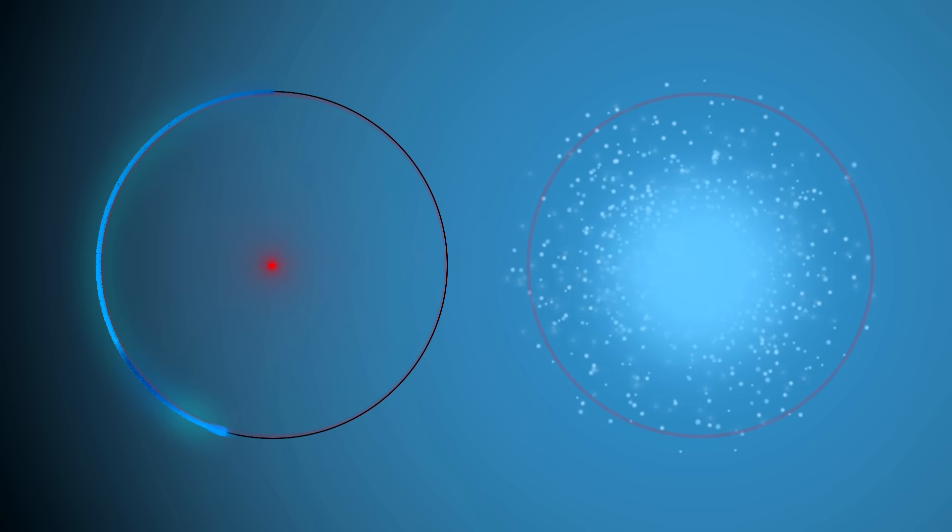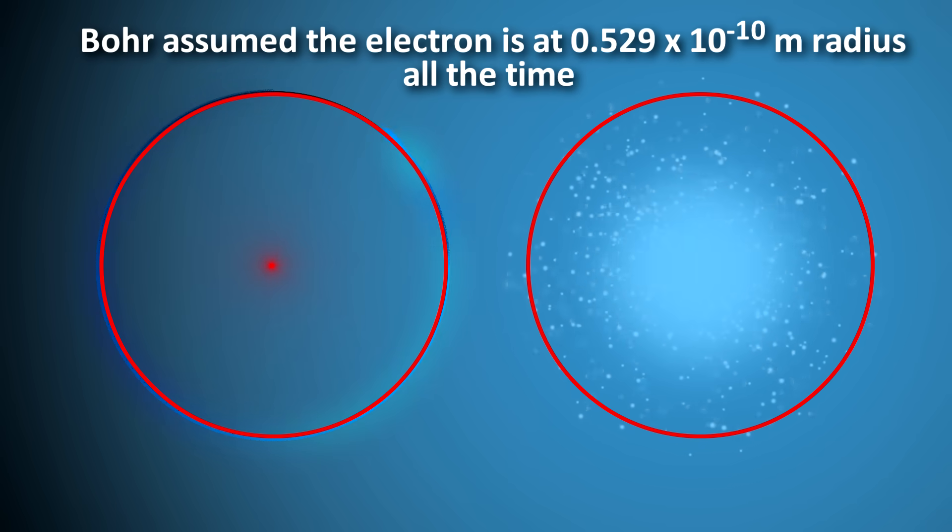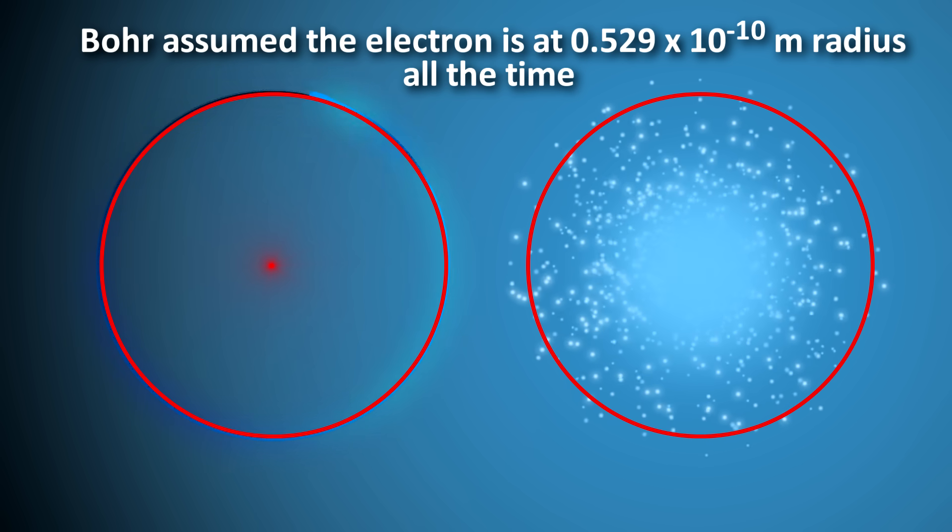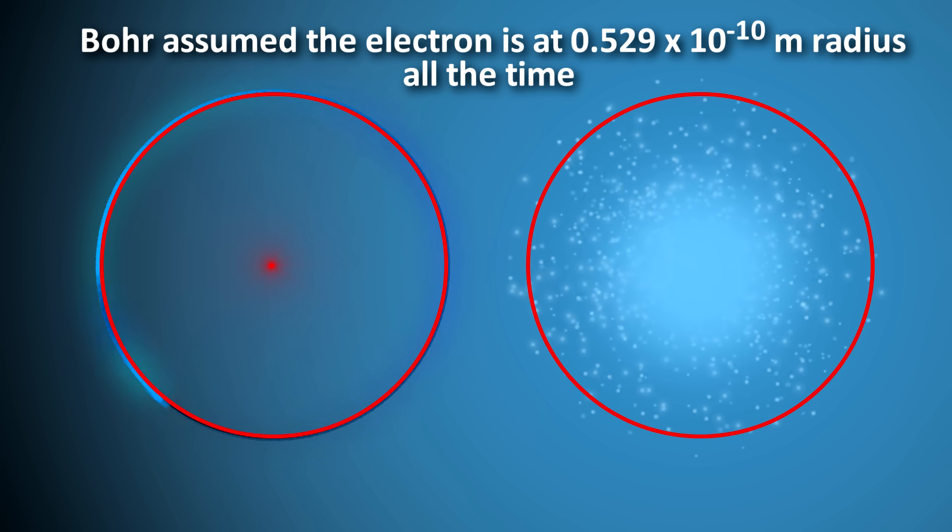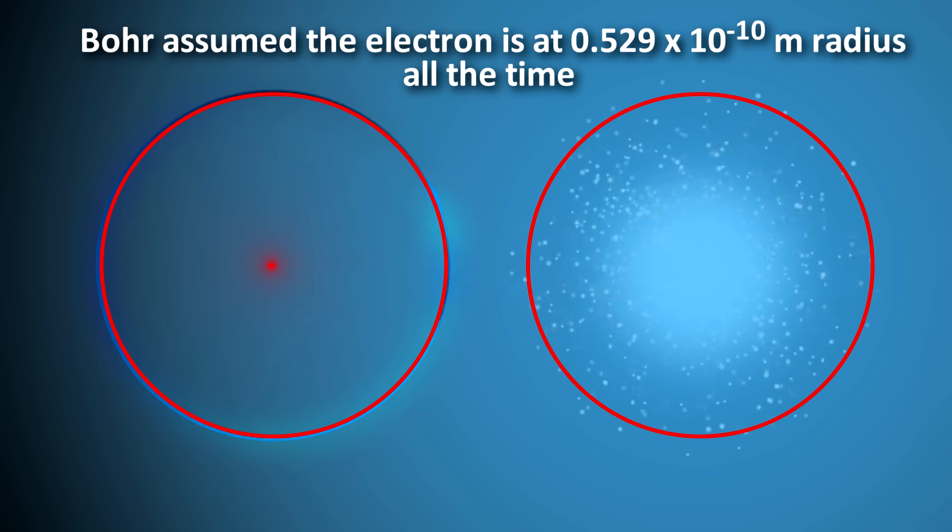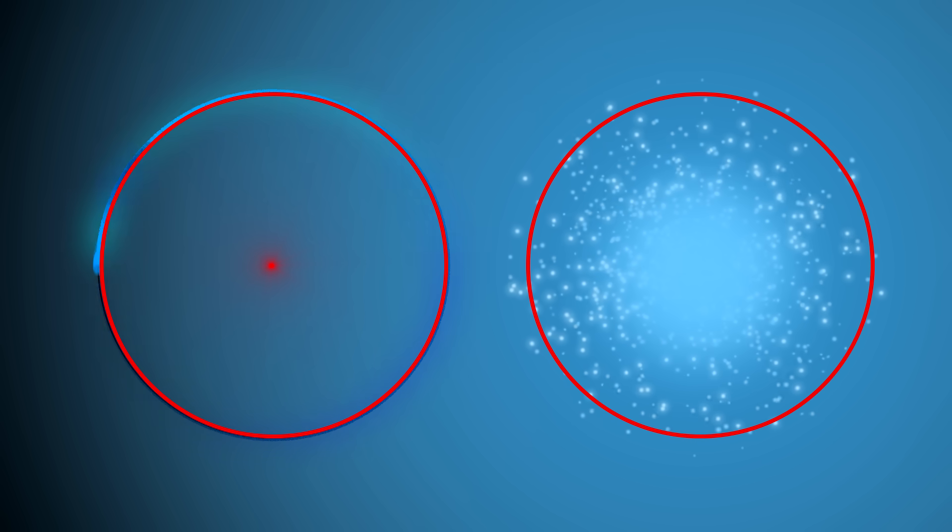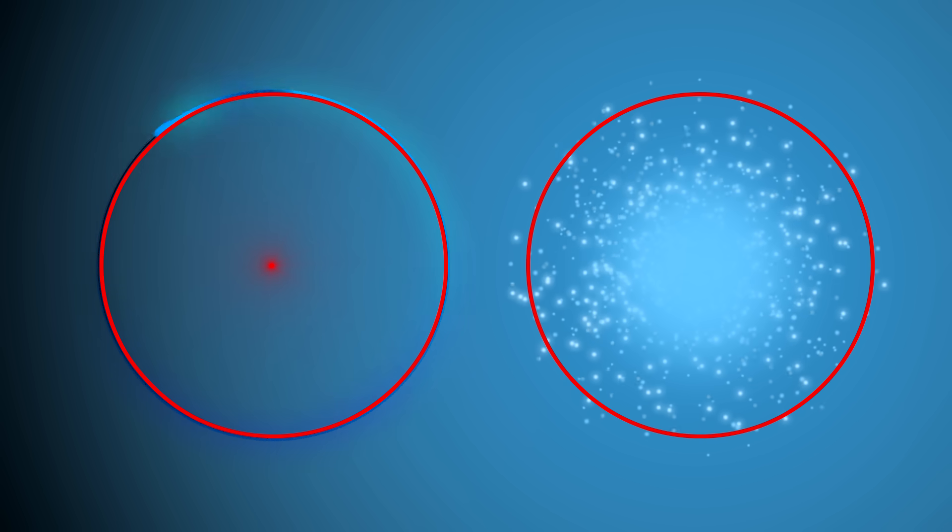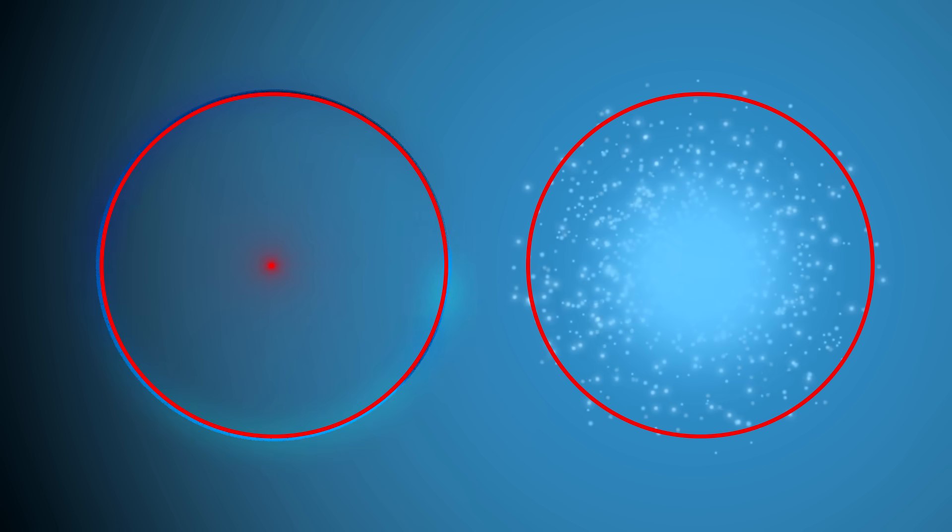So the most probable radius obtained from quantum mechanics is identical to the radius calculated by classical mechanics. In Bohr's model, however, the electron was assumed to be at this distance all the time. Whereas in the Schrodinger model, it is at this distance only some of the time. It has the highest probability of being at this radius, but it could be elsewhere too. The difference is due to the Heisenberg uncertainty principle and the fact that the electron acts like a 3D wave.